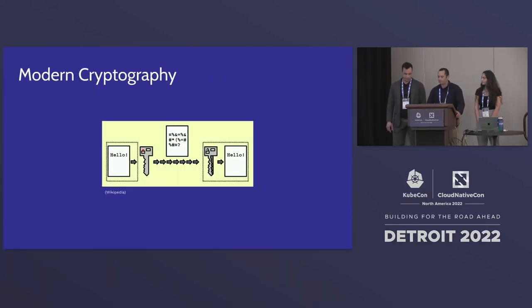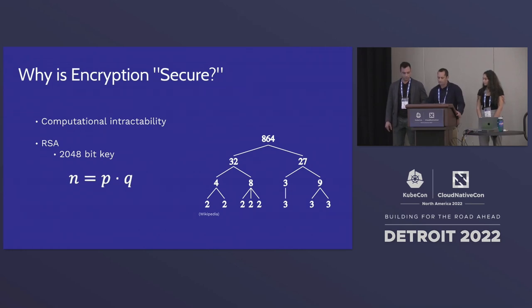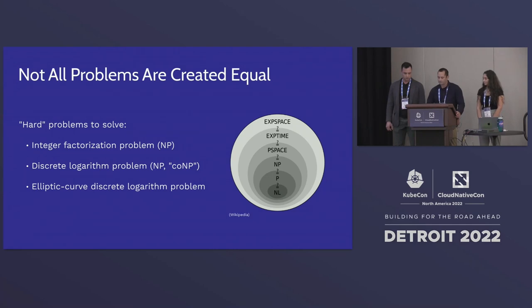First we have to talk about modern cryptography. Why is encryption secure? Common public key systems consist of three algorithms: one for key generation, one for encryption, and one for decryption. RSA is a modern key cryptosystem which, like other cryptosystems, relies on the fact that classical computers cannot solve hard mathematical problems in reasonable time. RSA usually generates a 2048-bit private key using two very large numbers P and Q, and it is not practical to factor and find them — introducing computational intractability.